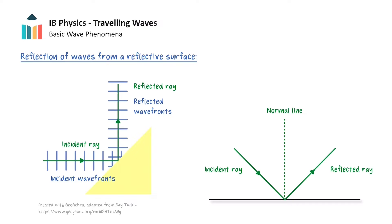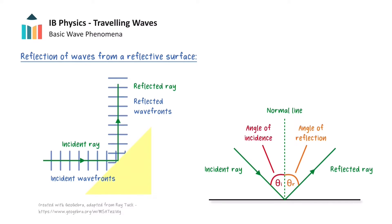We will draw in this line that is perpendicular to the reflecting surface at the point of incidence, known as the normal line. This line is important because it allows us to label the following two angles. The angle of incidence is measured between the incident ray and the normal line, and the angle of reflection is measured between the reflected ray and the normal line.